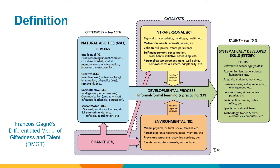Talent emerges from ability as a consequence of the student's learning experience. These definitions reflect the distinction between ability and performance and recognise other factors that affect the development of a person's giftedness into talent. Giftedness is the natural ability that you are born with. The domains include intellectual, creative, socio-affective and sensorimotor, as shown in the blue section on the left of this slide. Talent is how these gifts are displayed in a variety of fields, as seen in the green section on the right.